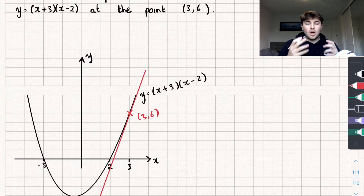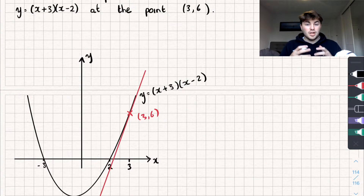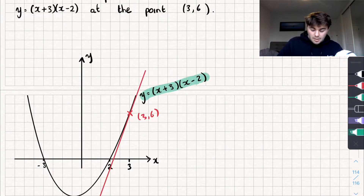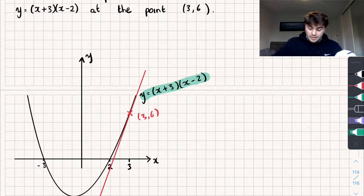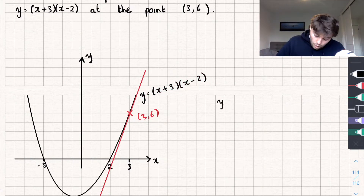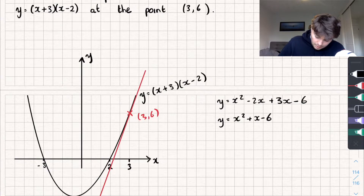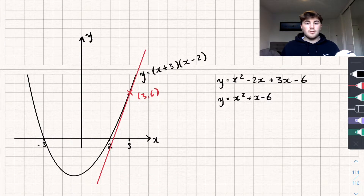The first thing I would do when finding the equation of a tangent is find its gradient, and we can do that by differentiating the curve and then finding the gradient at the point x = 3. The curve is currently factorised so it's not easy to differentiate directly. I'll expand it first: y equals x squared minus 2x plus 3x minus 6, which simplifies to y equals x squared plus x minus 6, and that's something we can differentiate quite easily.